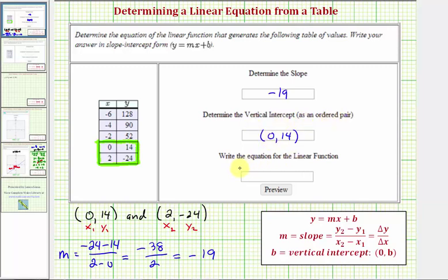And now for our last part, we're asked to write the equation of a linear function. We do want to write it in the form of y equals mx plus b. Well, we now know that the slope is equal to negative nineteen. And because the vertical intercept is the point zero comma fourteen, b equals fourteen. Therefore, the equation of our linear function is y equals negative nineteen x plus fourteen.